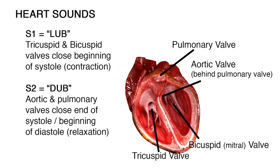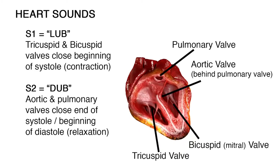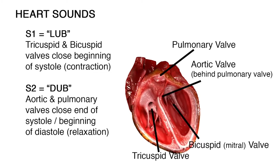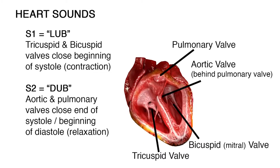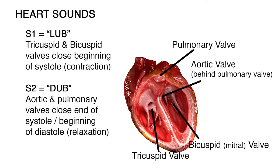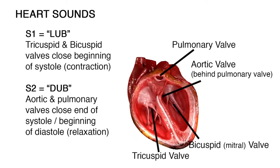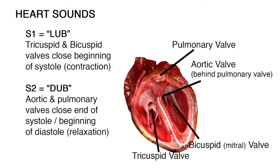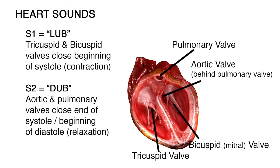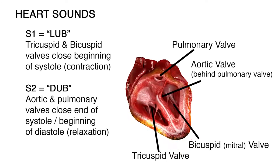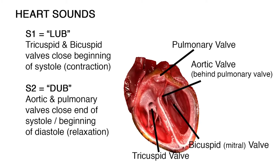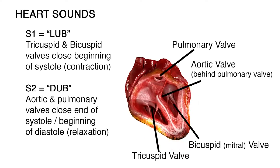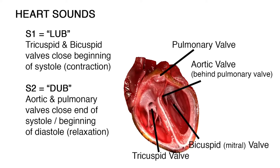As these two valves snap shut, the pulmonary and aortic valves just opened — this is the beginning of systole, or contraction of the ventricles. As the ventricles contract, blood is pumped through the pulmonary valve leading to the lungs, and the aortic valve leading to the aorta and the rest of the body. These valves then snap shut, making the second heart sound, S2, or 'dub' in lub-dub.